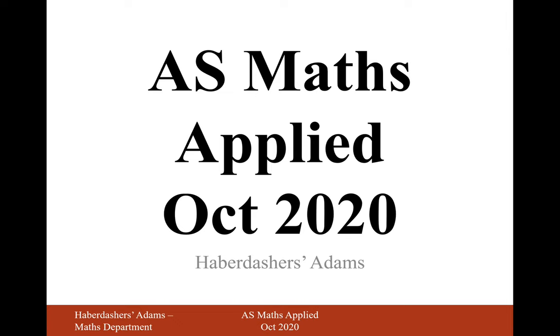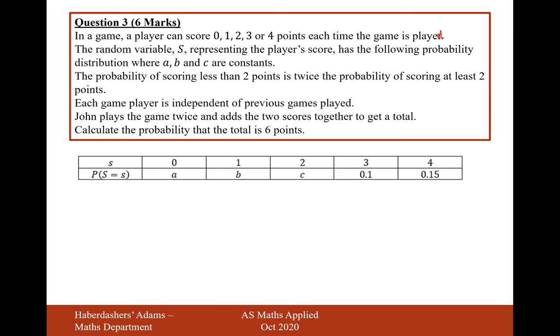Hello there, welcome to the October 2020 Applied Paper. Here we're looking at question 3. In a game, a player can score 0, 1, 2, 3 or 4 points each time the game is played. The random variable S, representing the player's score, has the following probability distribution where A, B and C are constants.